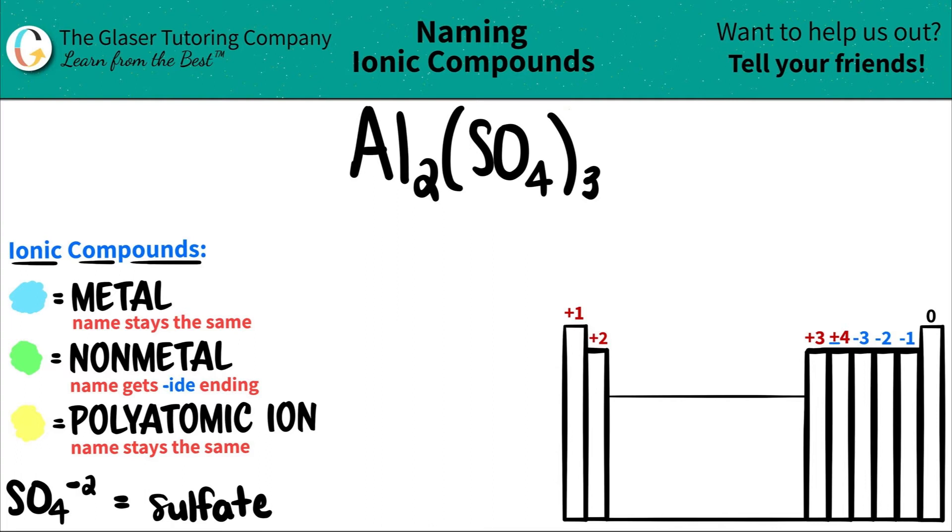Today we are going to be naming the ionic compound Al₂(SO₄)₃. Now here's a little trick: if you see that you have a compound that has three or more different elements in it, you know that you're dealing with at least one polyatomic ion.